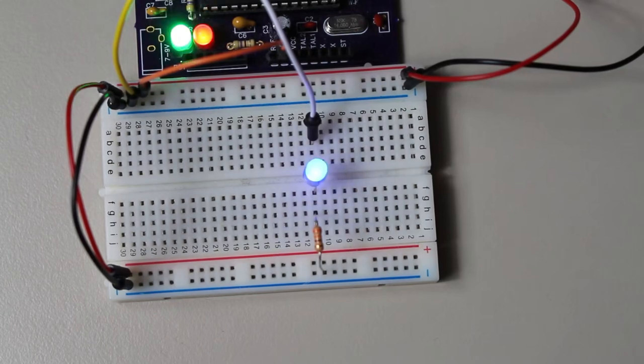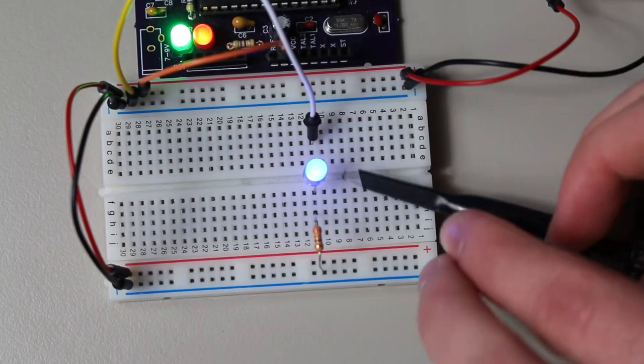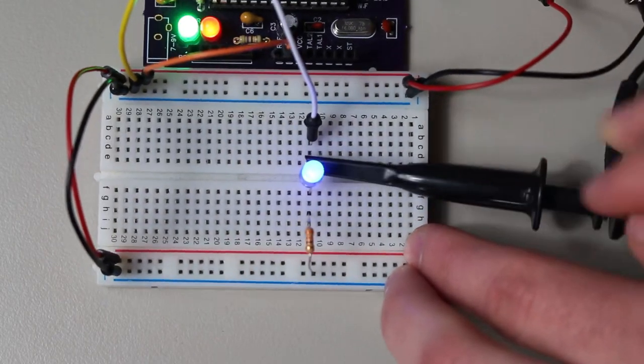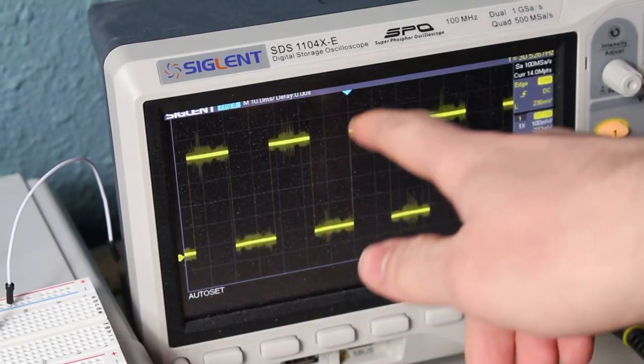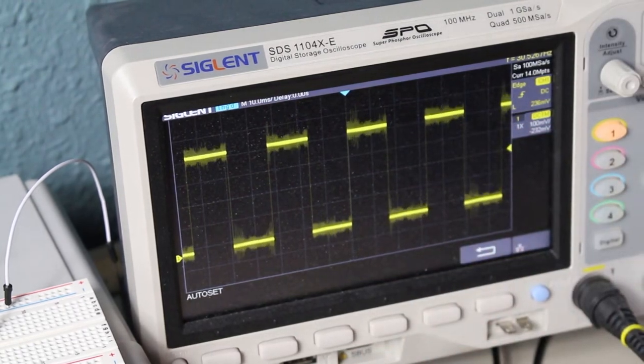So by using this method, we can have timed events without using the entirety of the CPU's focus. Using this method, we have essentially just created a PWM output on our LED. While this output works, there is actually still a more efficient way to toggle an external pin.